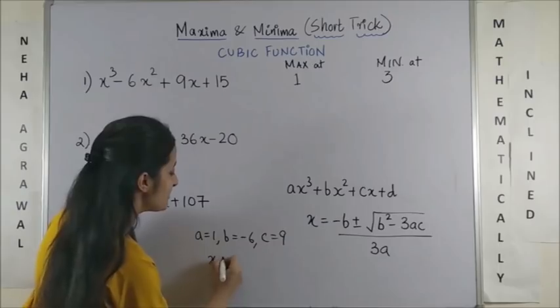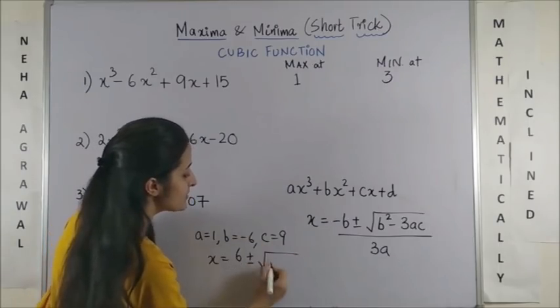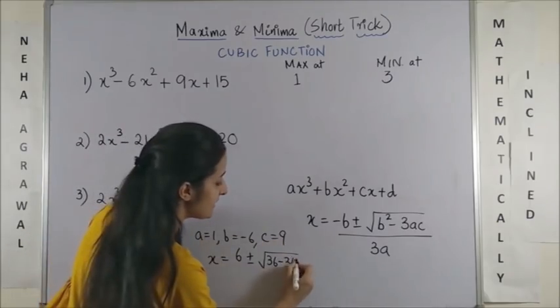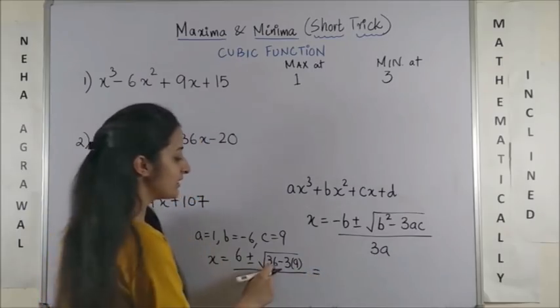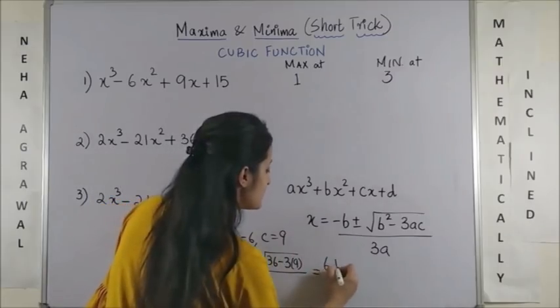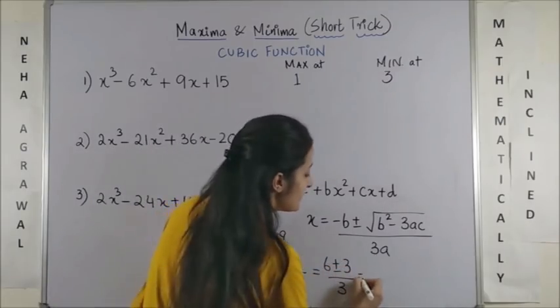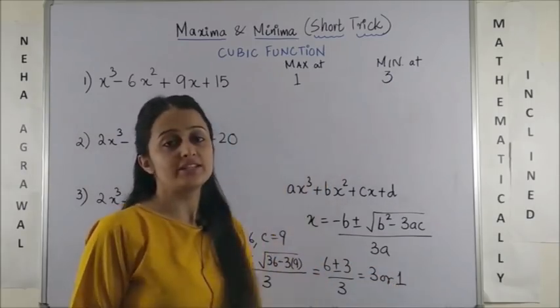So, here my x becomes minus b that makes it plus 6 plus minus b square minus 3ac. That makes it 9 upon 3a. So, this 36 minus 27 is 9. So, this would be 6 plus minus 3 by 3. 6 plus 3 by 3 gives you 3. 6 minus 3 by 3 would give you 1. So, these are the two points.